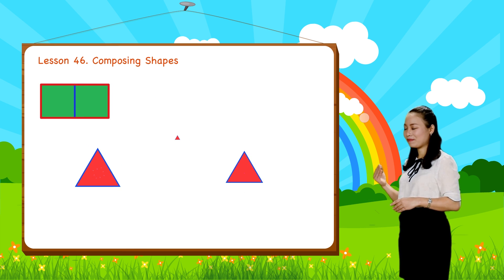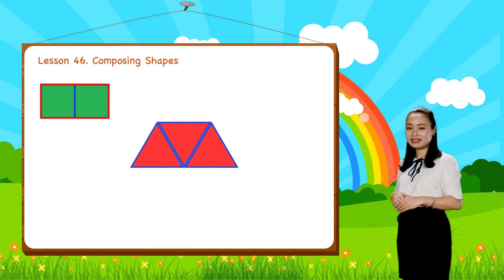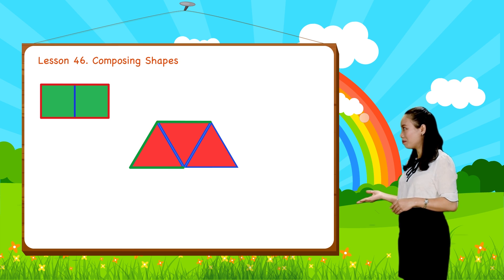Look, we can put three triangles together to make a trapezoid.